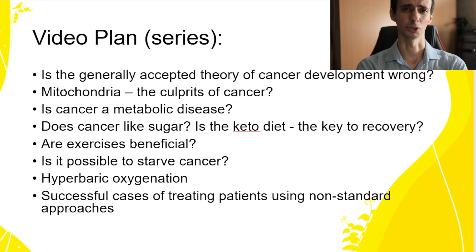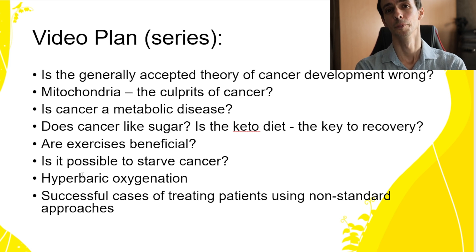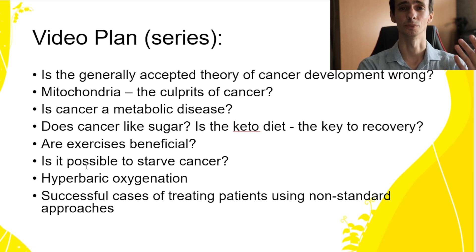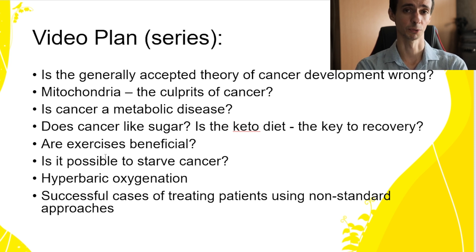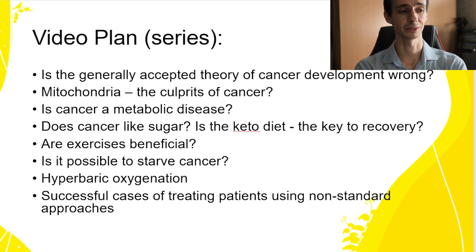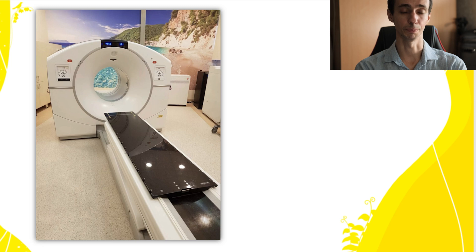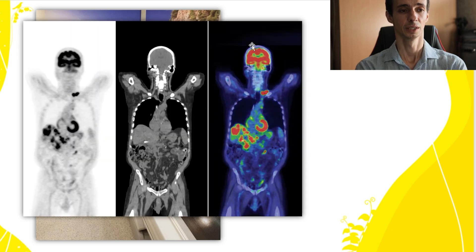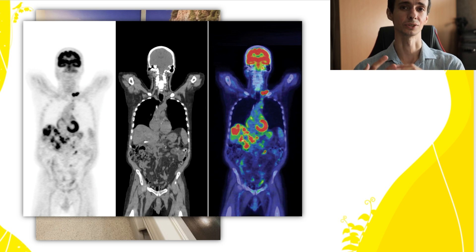We were talking about whether cancer is a mitochondrial disease, does cancer like sugar, what are the problems with our cancer theory or mutational theory that is highly accepted all over the world among oncologists, and we will talk about possible causes of cancer starvation. We talked about the ketogenic diet, we talked about PET CT scan and how tumors that love sugar will accumulate the marked glucose.